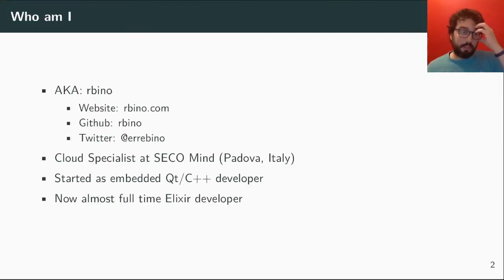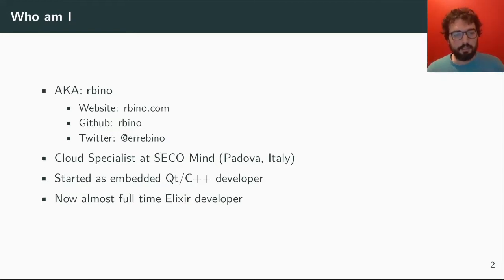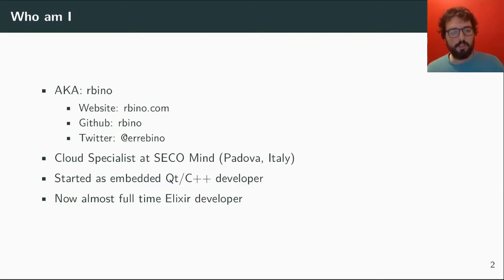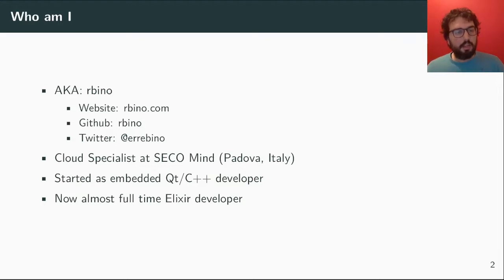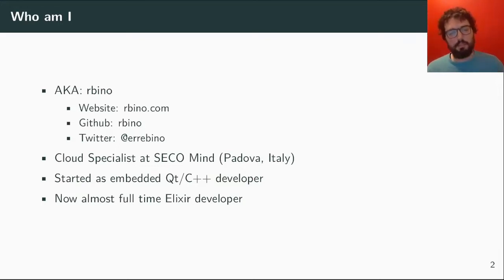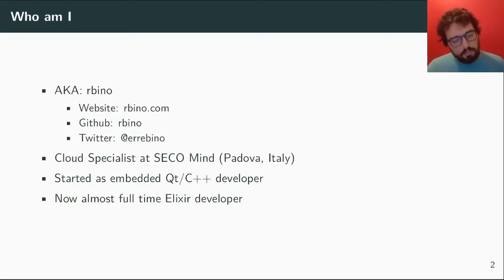I'm Riccardo Binetti, also known as Arbino online. This is my website, GitHub page, Twitter, etc. I'm a cloud specialist at SeqoMind in Padova, Italy. I started out there as an embedded Qt C++ developer but now I'm almost full-time developing in Elixir.